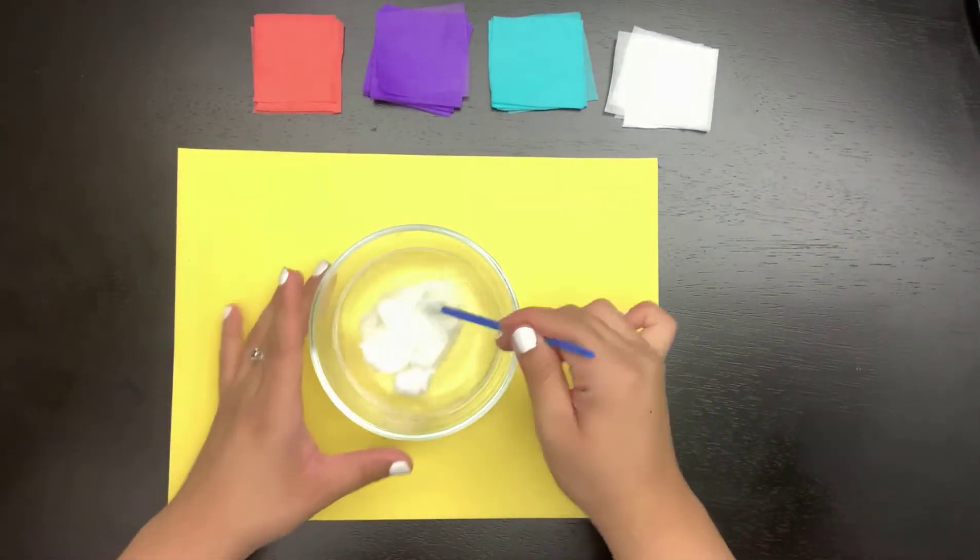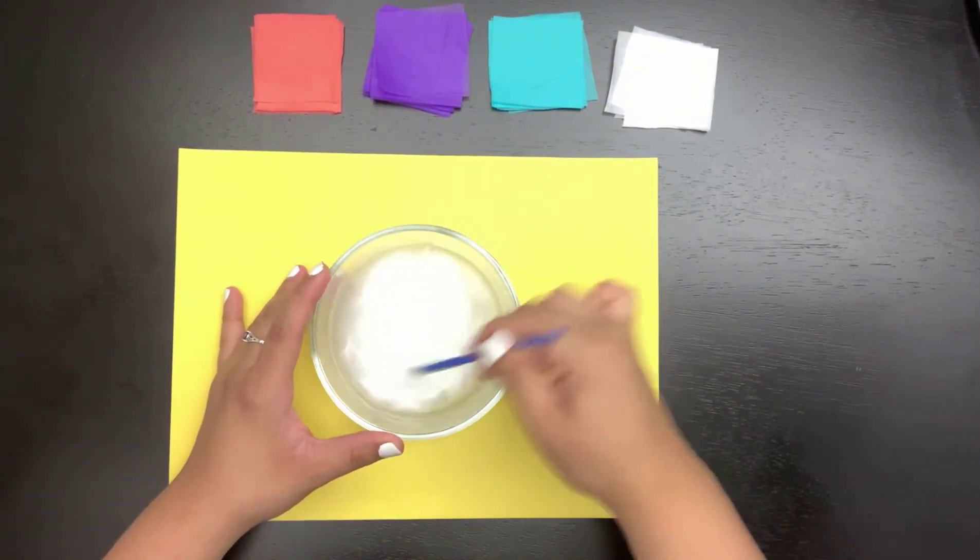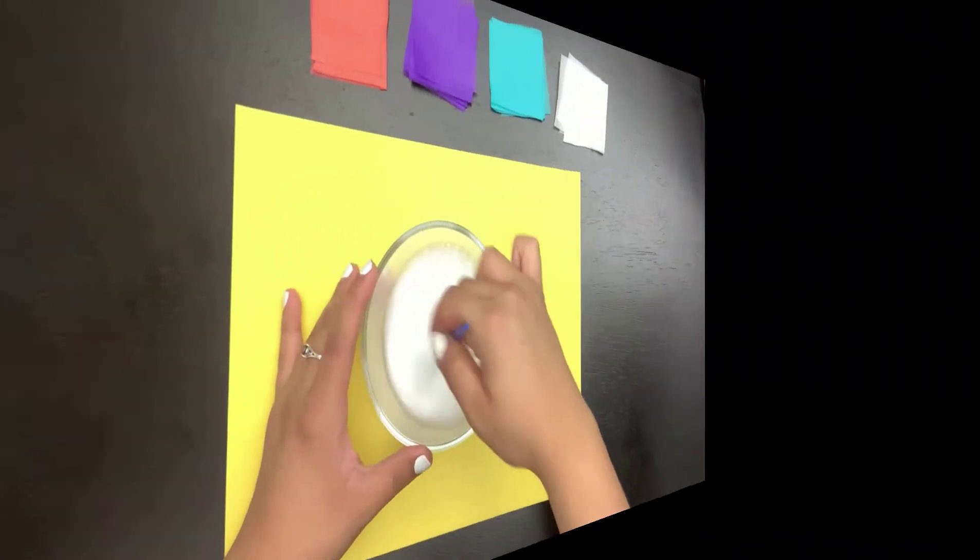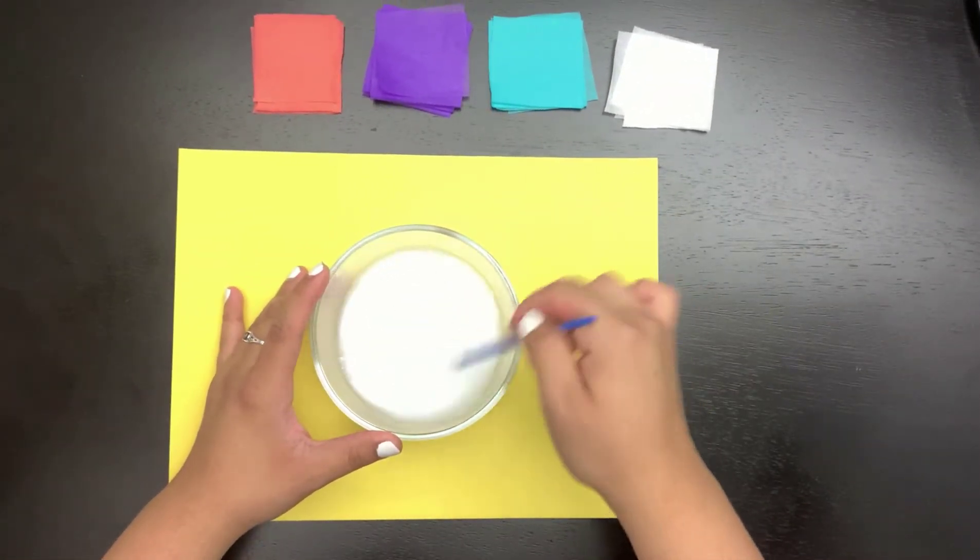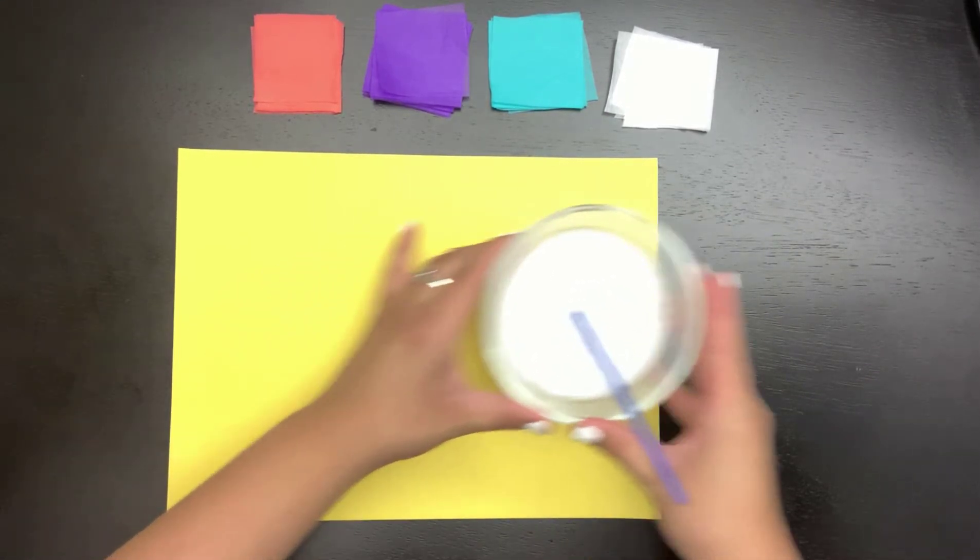Now that our glue and water have been added into the container it's time to take our paintbrush and mix both ingredients together. Once our water and glue have been mixed we can then set it aside and move on to our colorful tissue paper squares.